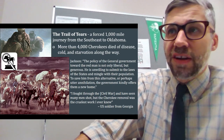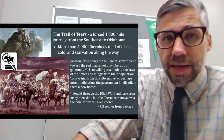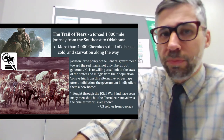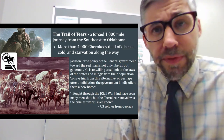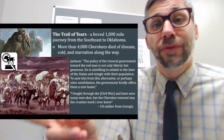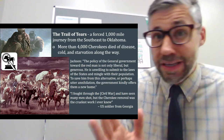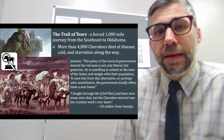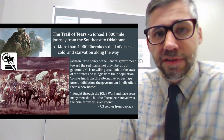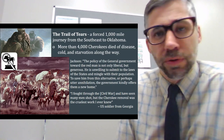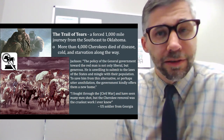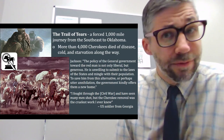Jackson wrote, 'The policy of the general government toward the red man is not only liberal, but generous. He is unwilling to submit to the laws of the states and mingle with their population. So, to save him from this alternative, or perhaps utter annihilation, the government kindly offers them a new home.' What Jackson was saying is: if we didn't do this, local whites in the southeast were going to round up and kill them — I did this for their own good. It might not have been perfectly legal, but it had to get done. It's not a great look, and the fact that the U.S. president did this against the laws of the United States and against the orders of the Supreme Court makes it an even worse look.